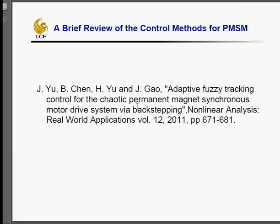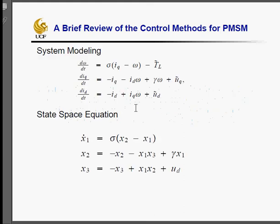Next, I will talk about control methods derived from backstepping with adaptive fuzzy tracking control. This is very interesting. First, the system model is given in this form—it's similar to what we got in our course. Then they rewrite the system into the following state-space equation with setting TL and UQ to 0. That means they simplified the problem and take UD, the d-axis voltage, as the only variable as the input of the system.